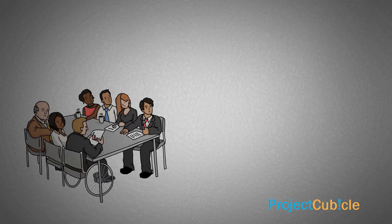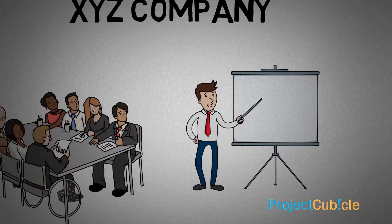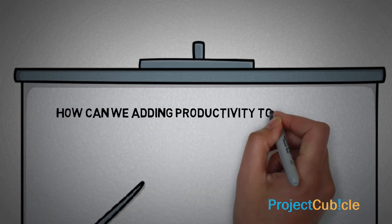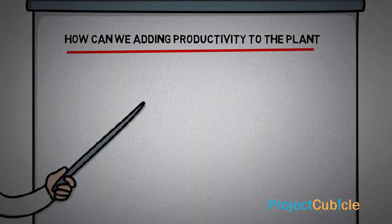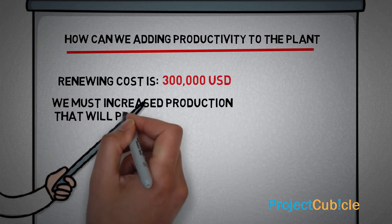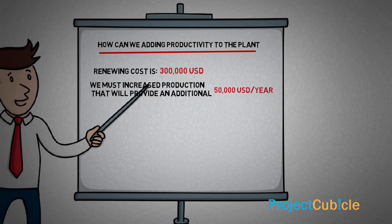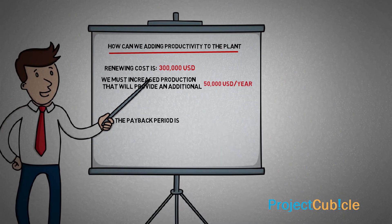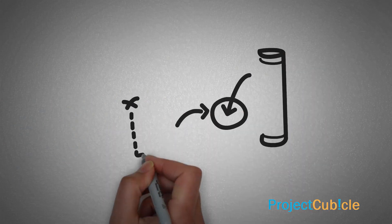For example, XYZ company plans to renew its existing production line. A cost-benefit analysis will be performed to calculate renewing cost against the benefits of added productivity. The renewing cost is $300,000 USD. The benefit is increased production providing an additional $50,000 USD per year. The payback period is $300,000 divided by $50,000, which equals six years.